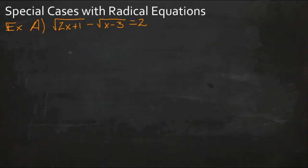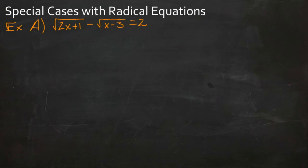Sometimes when you're dealing with radical equations, you'll end up with an equation that has radicals on both sides, and occasionally you'll end up having to do the squaring process twice. I want to run through an example that details that process. This is actually example A in your online text for the special cases with radical equations lesson. Let's go through this step by step and work out the process.